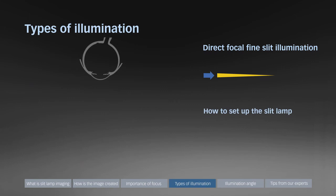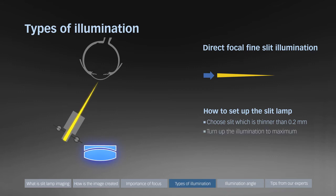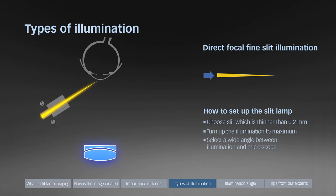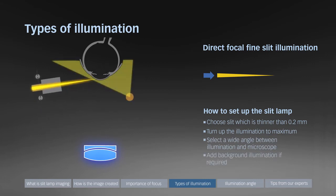To set up the slit lamp for direct focal fine slit illumination, choose a slit which is thinner than 0.2 mm, turn up the slit illumination power to the maximum, select a wide angle between illumination and microscope, and add a small amount of background illumination if required. For optical sections, an angle of 90 degrees provides best depth of focus.